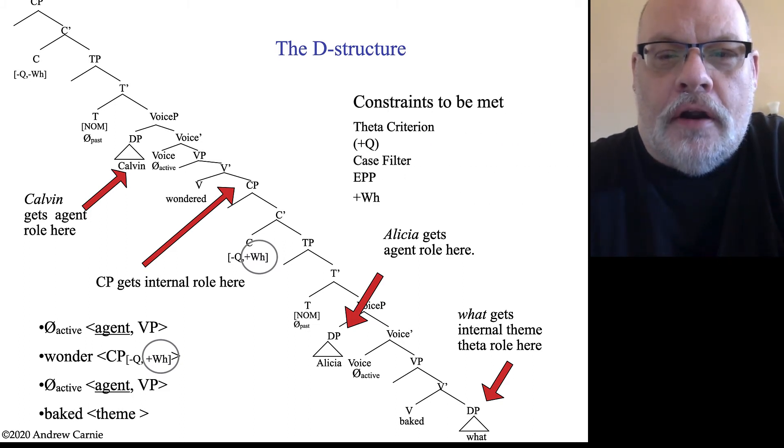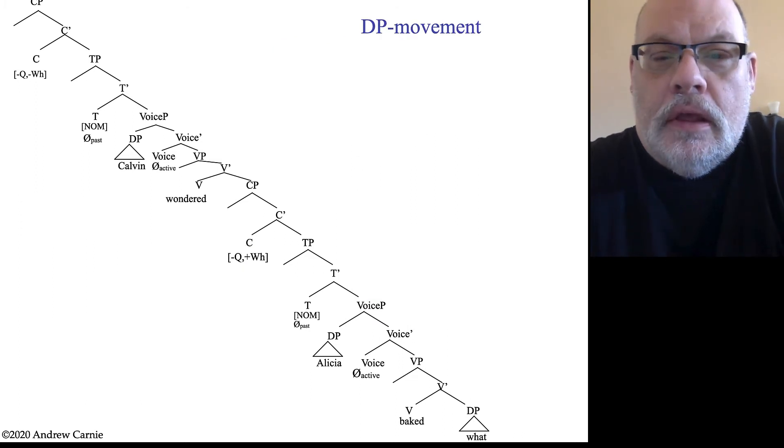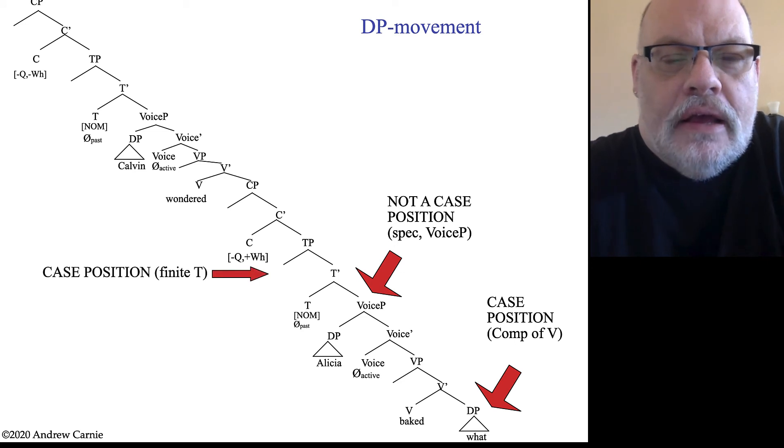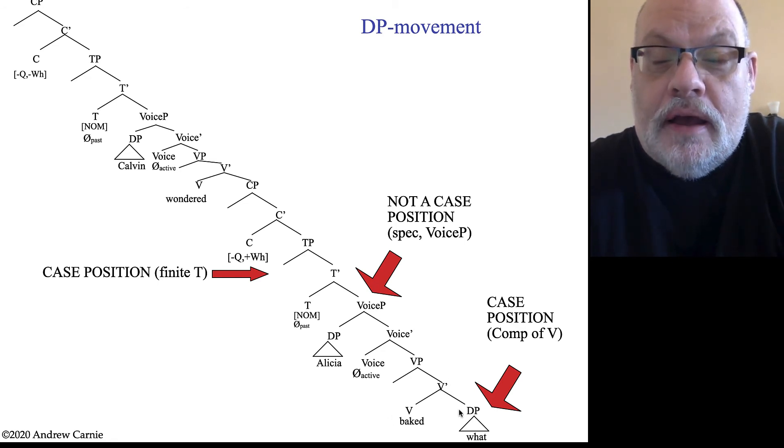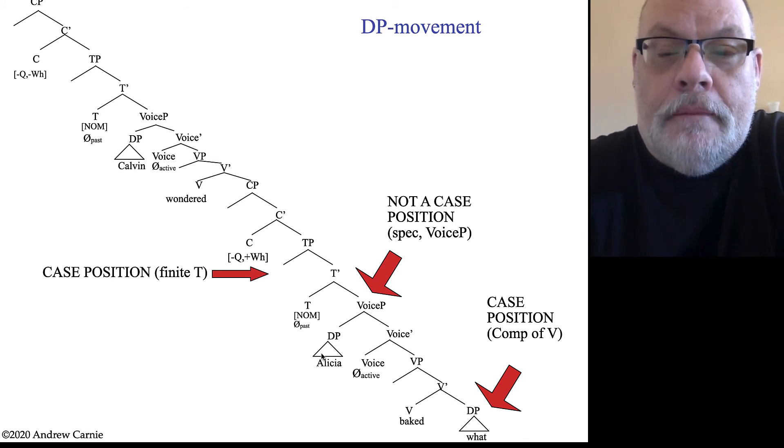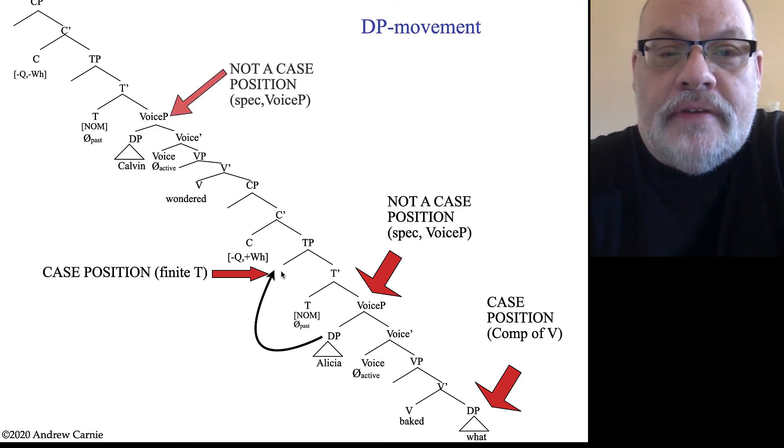All right. So we've got our constraints here. We've met the theta criterion. There is no plus Q in this sentence. So there's a minus Q here and there's a minus Q here. If this was another language, this one down here might be plus Q. All right. Let's talk about case. So downstairs, right, this DP is in a case position. It's the complement to the V. And that's precisely what you expect, that it's going to be licensed here. That's also its theta position. But Alicia is not in its case position. The specifier voice phrase is not a case position in English. The specifier of TP is the case position for nominative case. So this element here is going to have to move to the specifier of this TP in order to get case.